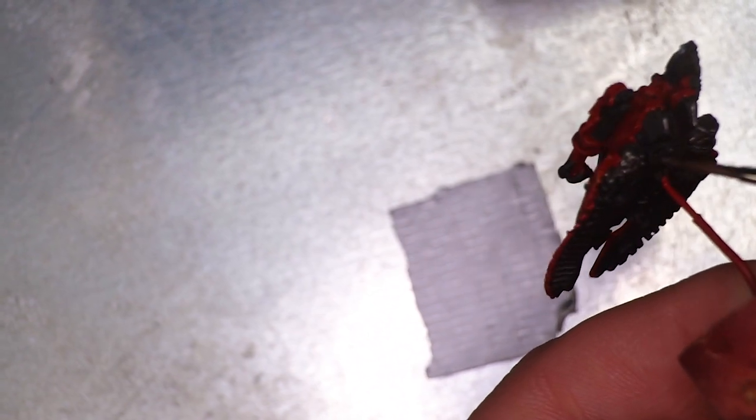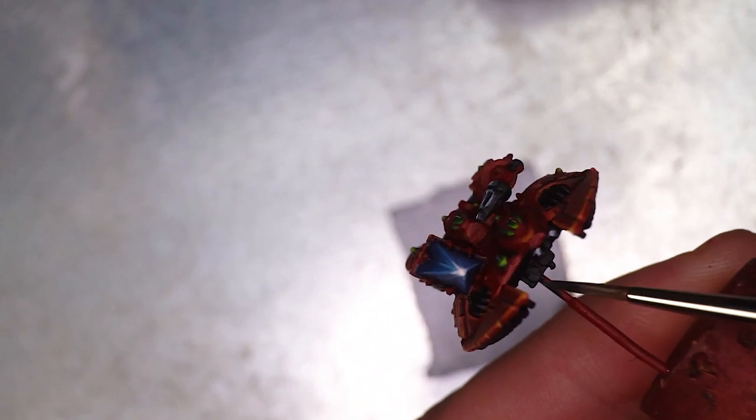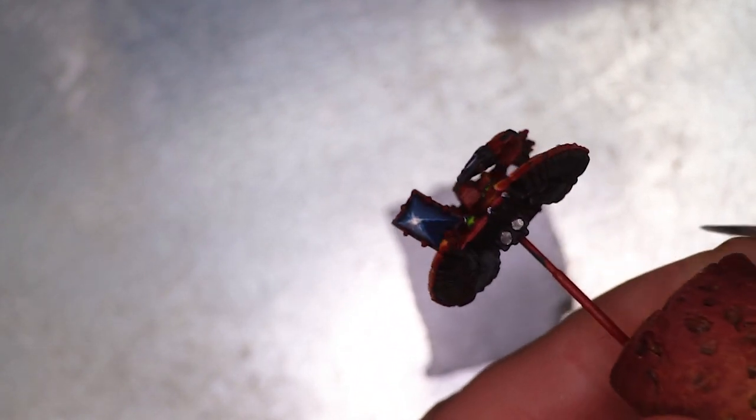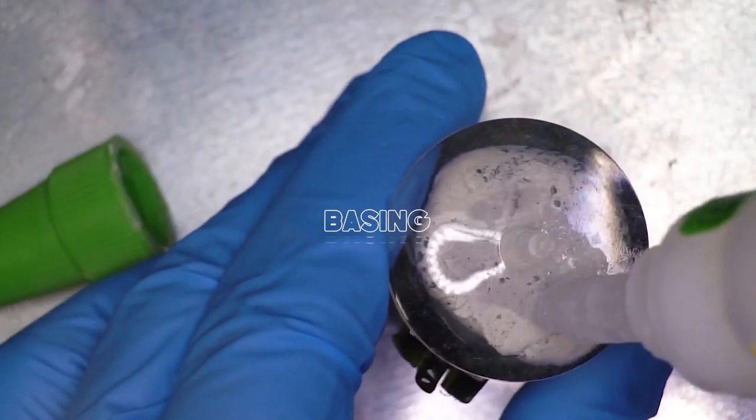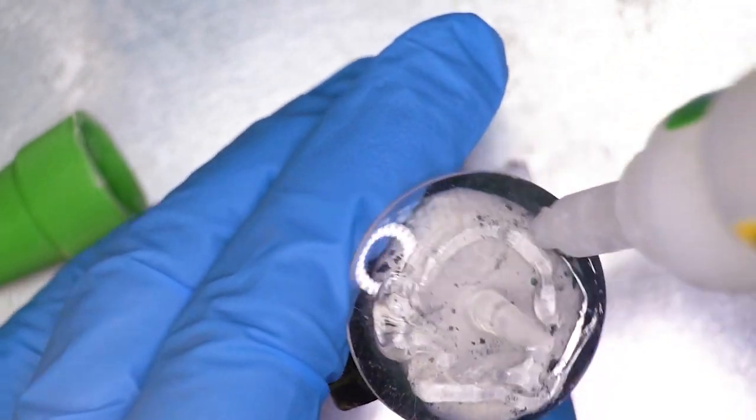Now if this was a full size model I would have done some additional edge highlights into the undercarriage but because of the scale and you're not going to see it I didn't bother in this instance. There's going to be a lot of these little fire prism ships on the battlefield and the undercarriages are not going to be seen so it's not too much of a concern for me.